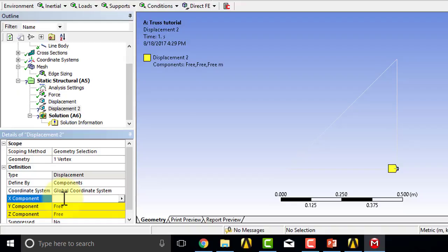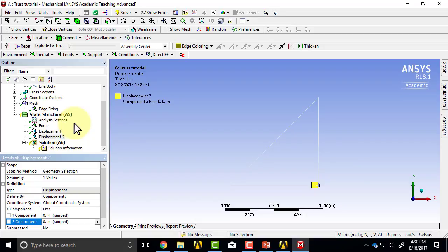I will say X is free, Y is 0, and Z is 0. So those displacements, these two displacements are known at that vertex. So that completes the specification of the mathematical model. Let's save the project.